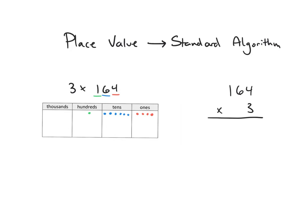On the place value disks, I am going to make three copies of the four 1s. You can see that I get 12 ones here, so I need to regroup 10 of those 1s into 1 ten. Here are 10 of the 1s, and that's going to become 1 ten.